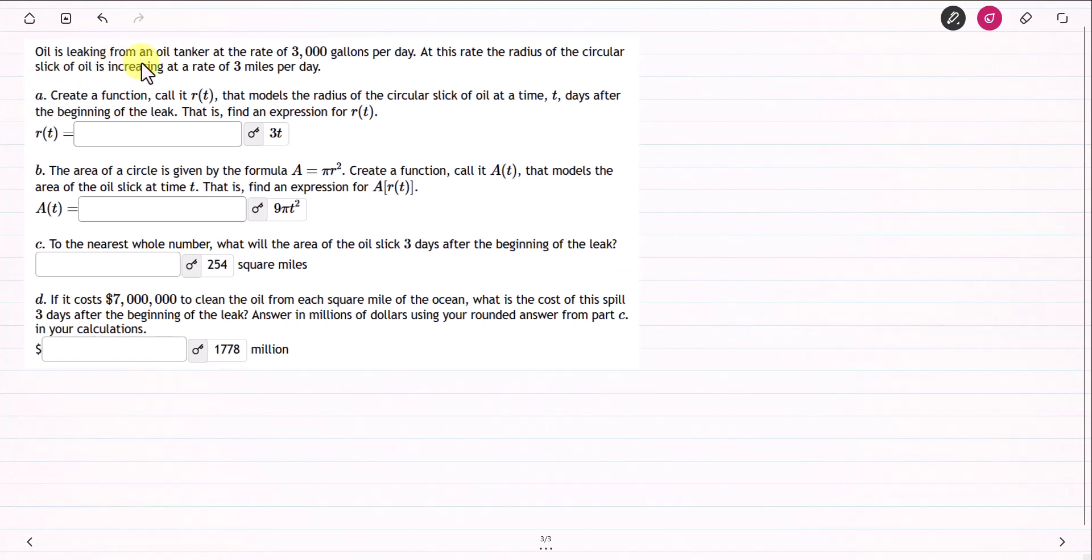Oil is leaking from an oil tanker at the rate of 3,000 gallons per day. At this rate, the radius of the circular slick of oil is increasing at the rate of 3 miles per day.